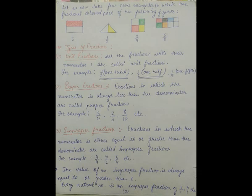Now let us move to the types of fraction. First, unit fractions: all fractions with their numerator equal to one are called unit fractions. For example, one by three (one third), one by two (one half), one by five (one fifth), etc.